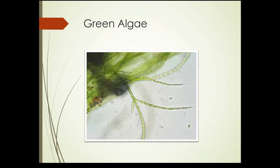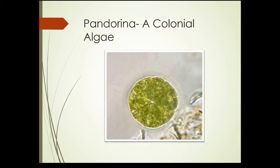This photograph shows a branching filament type green algae. This would be very close to microscopic, but you can sort of make out the divisions that might be individual cells. This next slide shows a colonial green algae made up in this sphere of many cells — you can see flagella.